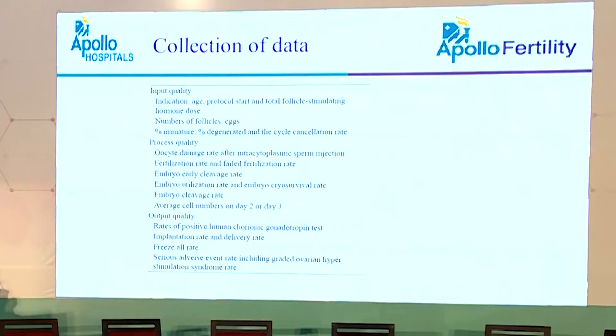Data collection is very important. Input quality includes the indication for the case, patient age, protocol used, hormones administered, number of follicles counted, and number of eggs retrieved. Process quality includes how many MII oocytes were available for injection, how many embryos developed, how many reached cleavage stage on day two and three, and how many became blastocysts. Output quality covers the rate of positive beta-HCG tests, implantation rate, number of healthy babies delivered, freeze-all rate, and any serious adverse events that must be notified.